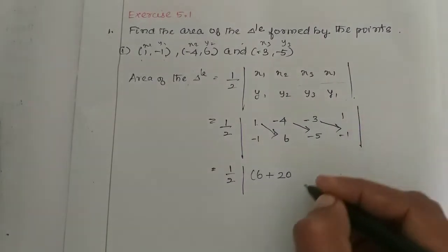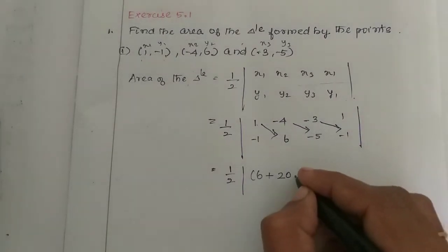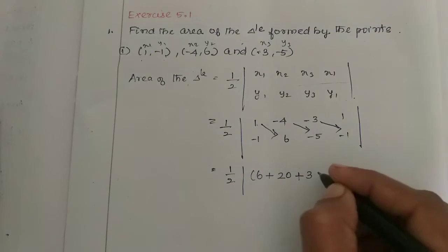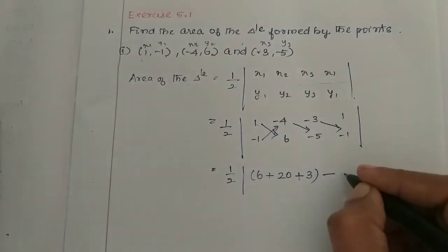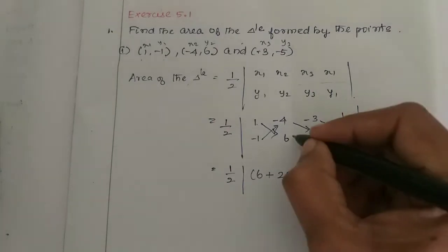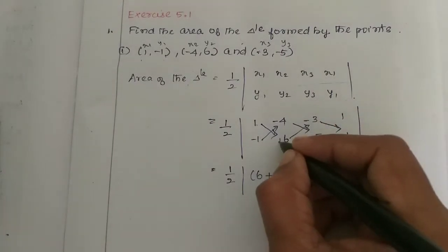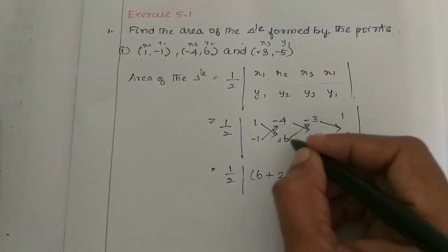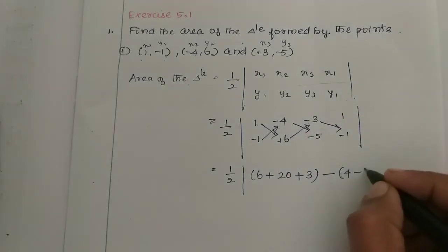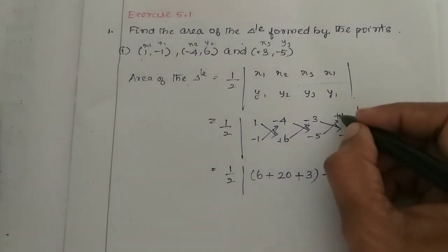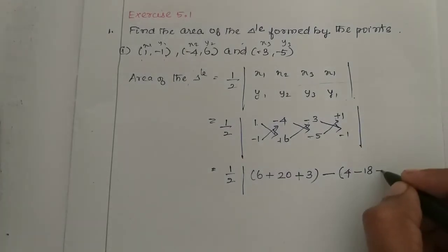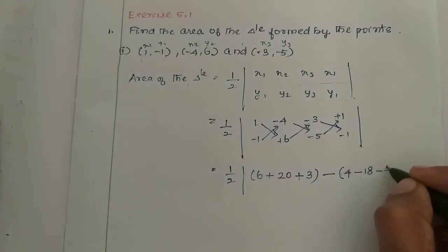Minus 4 into minus 5 — minus into minus is plus, 4 times 5 is 20. Minus 3 into minus 1 — minus into minus is plus, 3 into 1 is 3. Then minus: minus 1 into minus 4 — minus into minus is plus, 1 into 4 is 4. 6 into minus 3 — plus into minus is minus, 6 times 3 is 18. At minus 5 into plus 1 — minus into plus is minus, 5 ones are 5.